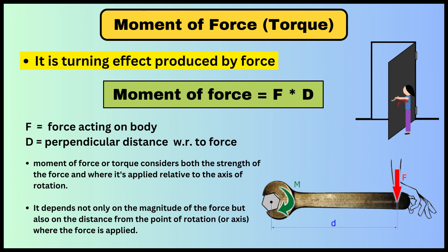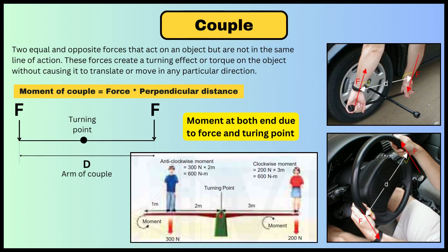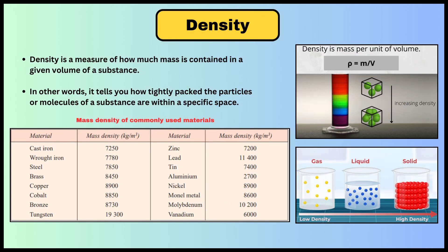The next term is a couple, which is similar to moment of force. In a couple, two forces are applied at the two ends of a lever or arm. The middle portion is the turning point, and we get movement at both ends. An example is the steering wheel — we apply force at two ends. The moment of a couple is force multiplied by the perpendicular distance.